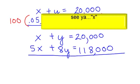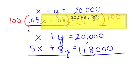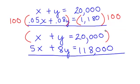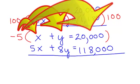I am going to eliminate the x's. The second x is 5X. I'm going to make my first one a negative 5X. Can I do that? As long as I multiply the entire equation by negative 5.